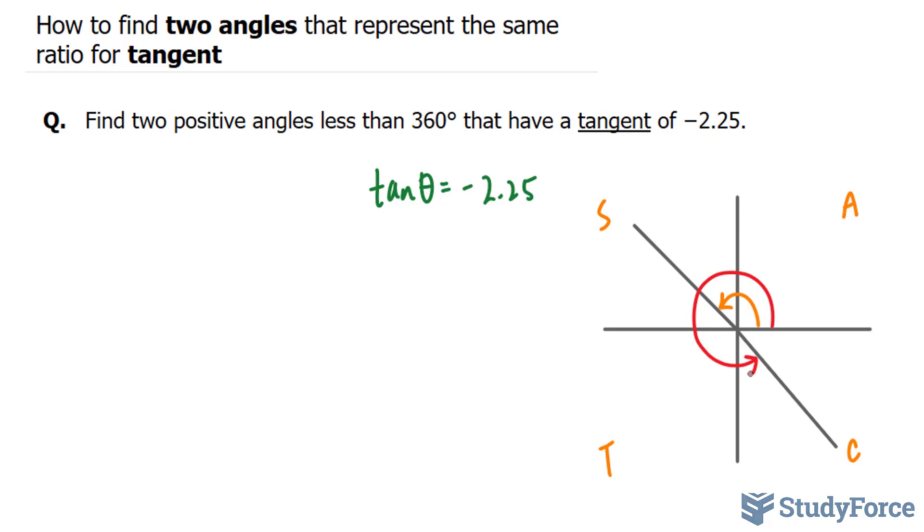The next thing that I want you to look at is this ratio itself. The ratio is negative, and we prefer to use positive ratios. So take the absolute of that number. The absolute of negative 2.25 is positive 2.25. So let's work with tangent theta equals positive 2.25.